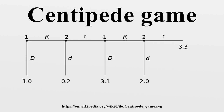One possible version of a centipede game could be played as follows. Consider two players, Alice and Bob. Alice moves first. At the start of the game, Alice has two piles of coins in front of her. One pile contains four coins and the other pile contains one coin. Each player has two moves available: either take the larger pile of coins and give the smaller pile to the other player, or push both piles across the table to the other player. Each time the piles of coins pass across the table, the quantity of coins in each pile doubles.